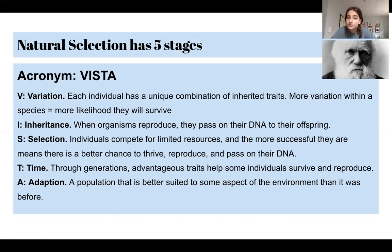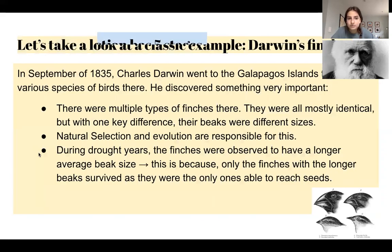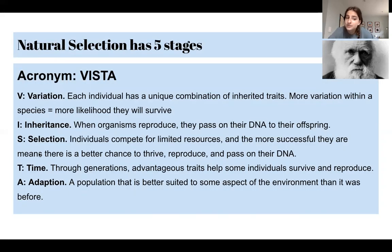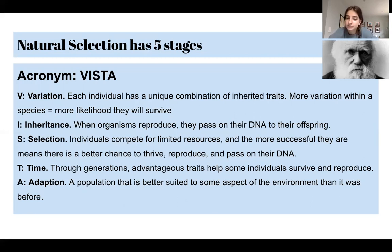S is for selection — individuals compete for limited resources, and the more successful they are means a better chance of survival and reproduction and passing on their DNA to future generations. T is for time — through generations, advantageous traits help some individuals survive and reproduce. And A is for adaptation — a population becomes better suited to aspects of the environment, essentially adapting to it. Individuals with stronger, better adaptations have more likelihood of survival.